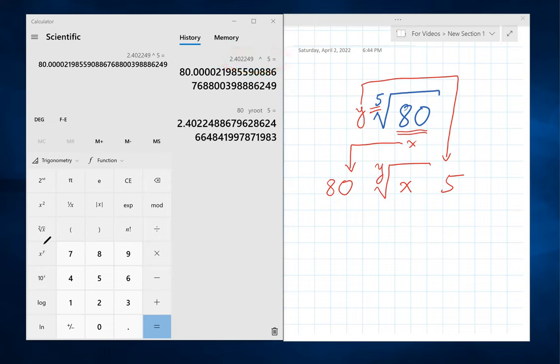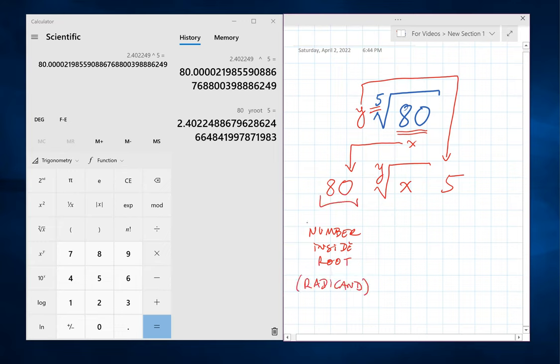In summary, here's the procedure. First, you enter the number inside the root, also called the radical. Then you enter second key. Then the y root of x key.